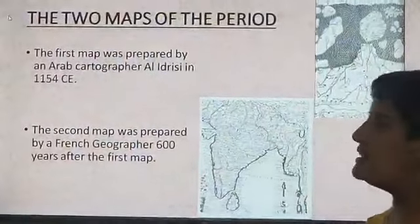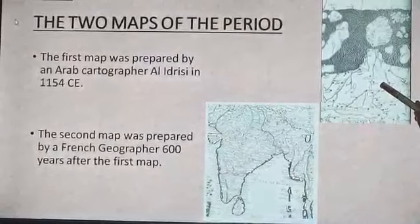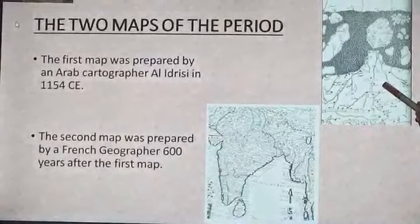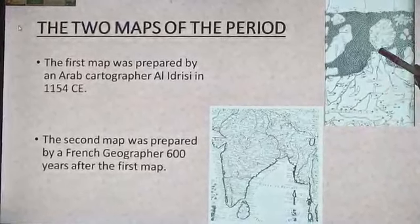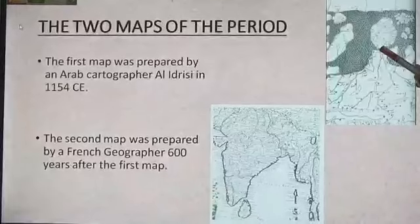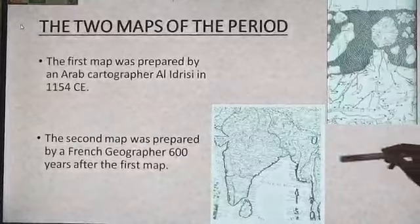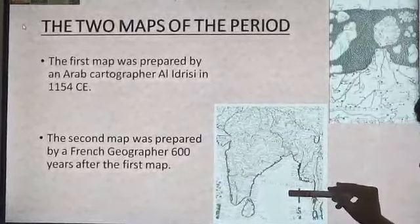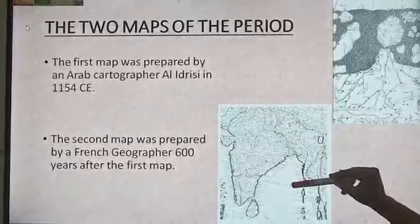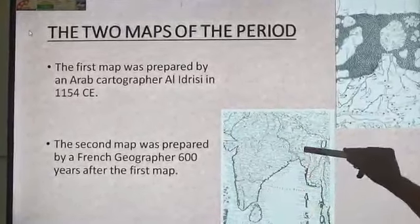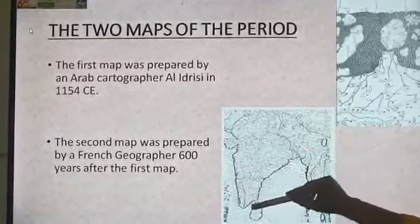Children, here you can see two types of maps. Both the maps are of India. The first map was prepared by an Arab cartographer Al Idrisi in 1154 CE. This map is flipped as it shows the southern area on the top and the northern area on the bottom. This second map was made after 600 years of the first map. It was made by a French geographer, and here the coastal area is very much detailed.